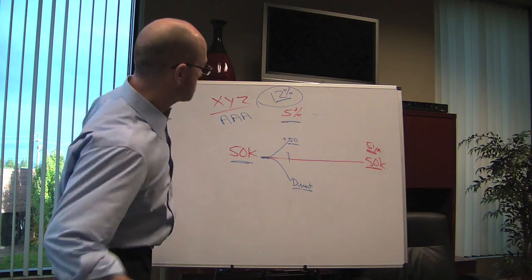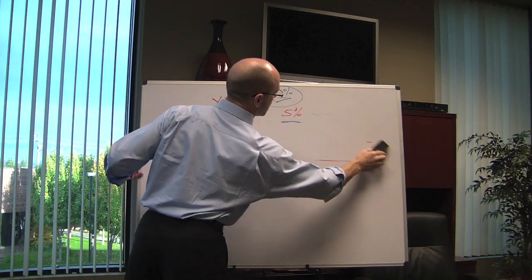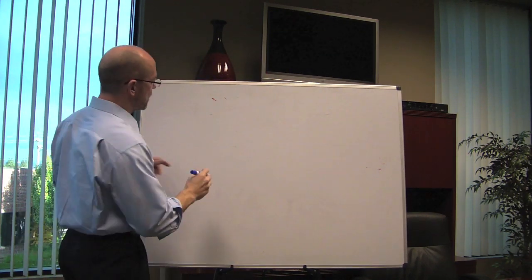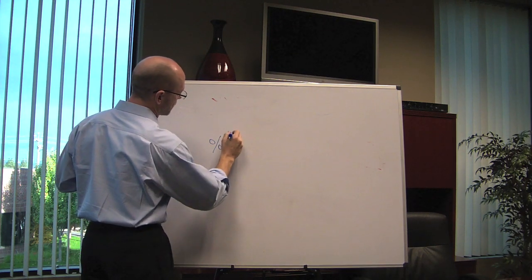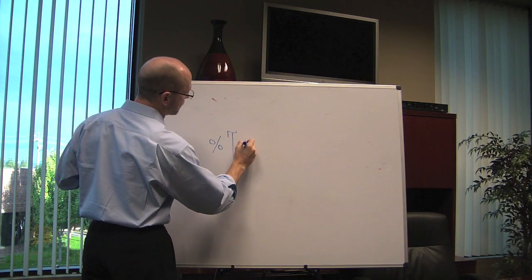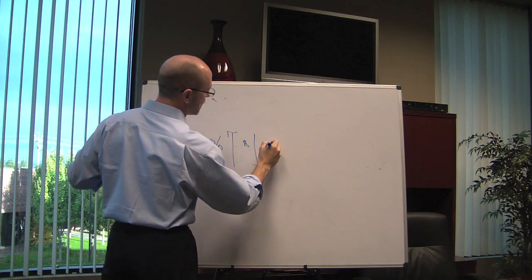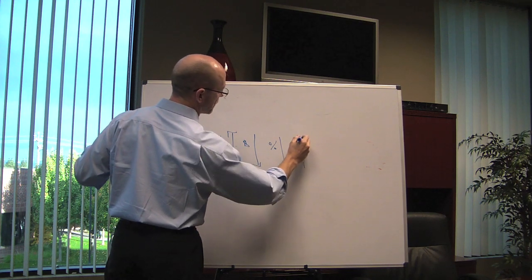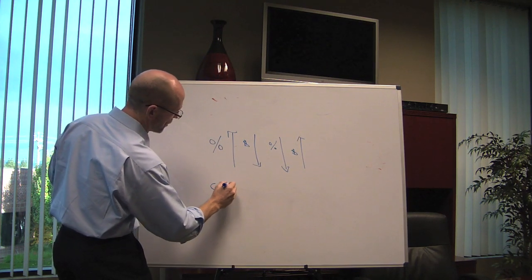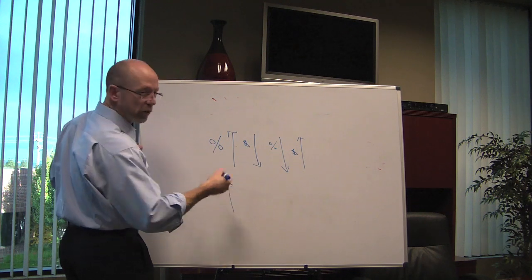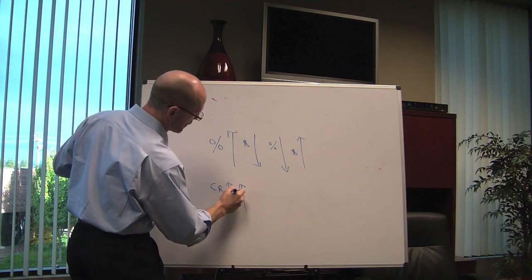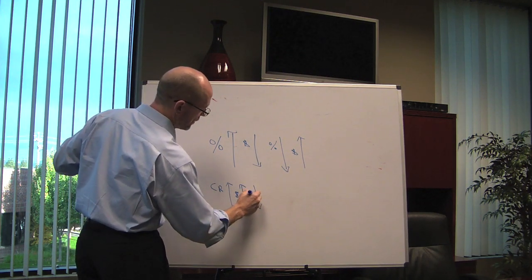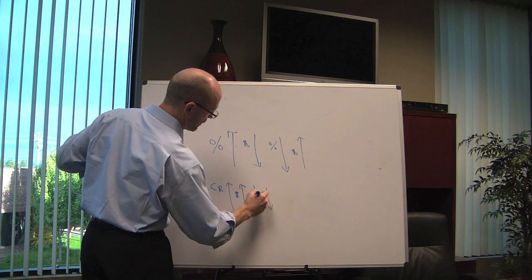So, in summary, when interest rates are on the rise, bond prices generally fall. When interest rates are falling, bond prices are generally rising, just like my illustration. When credit ratings are on the rise, or a credit rating for a given company, the price, generally speaking, will rise. When a credit rating declines, the price, generally speaking, will decline.